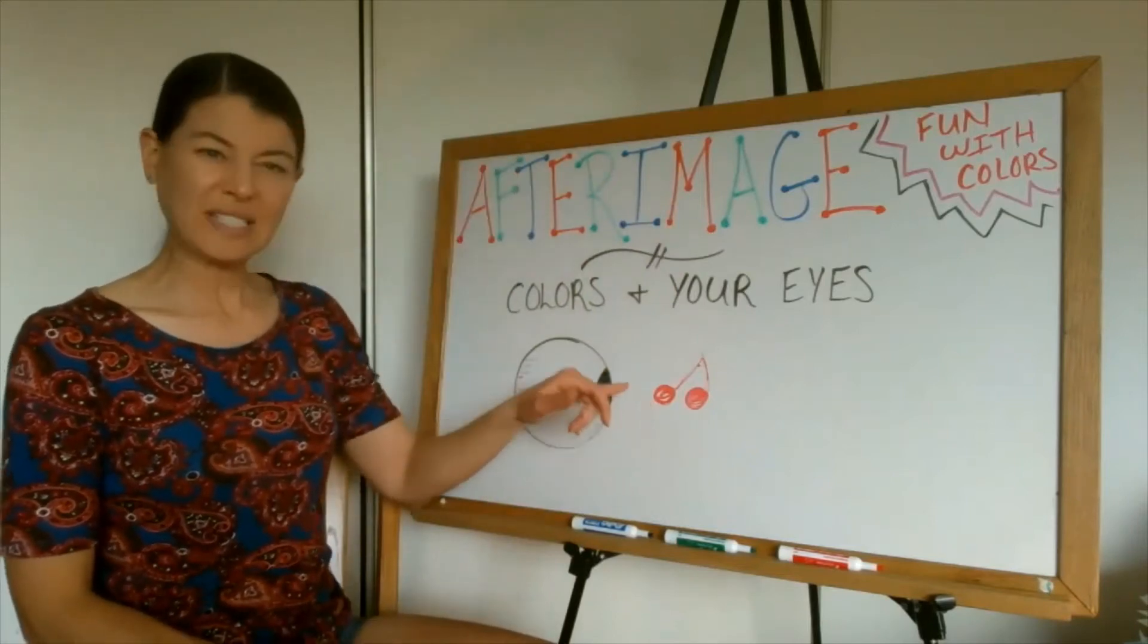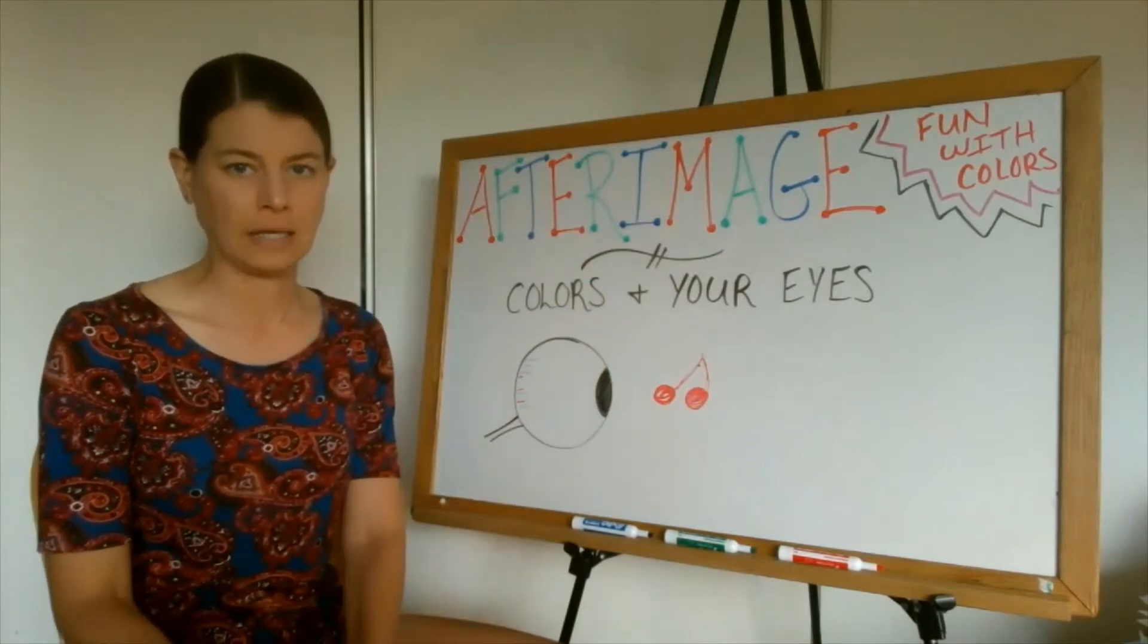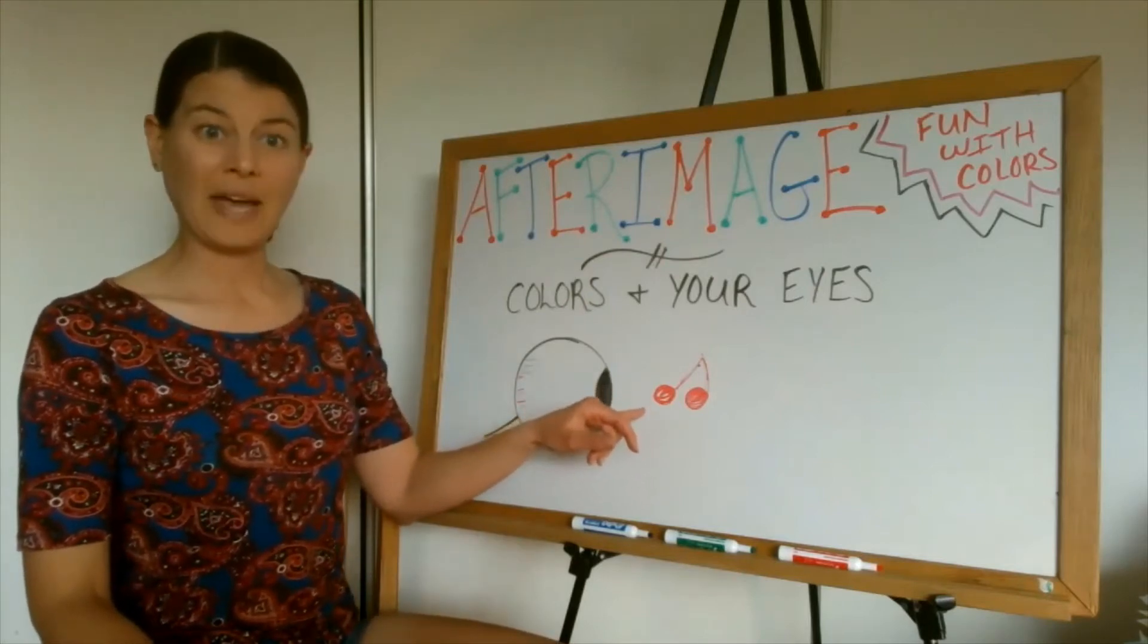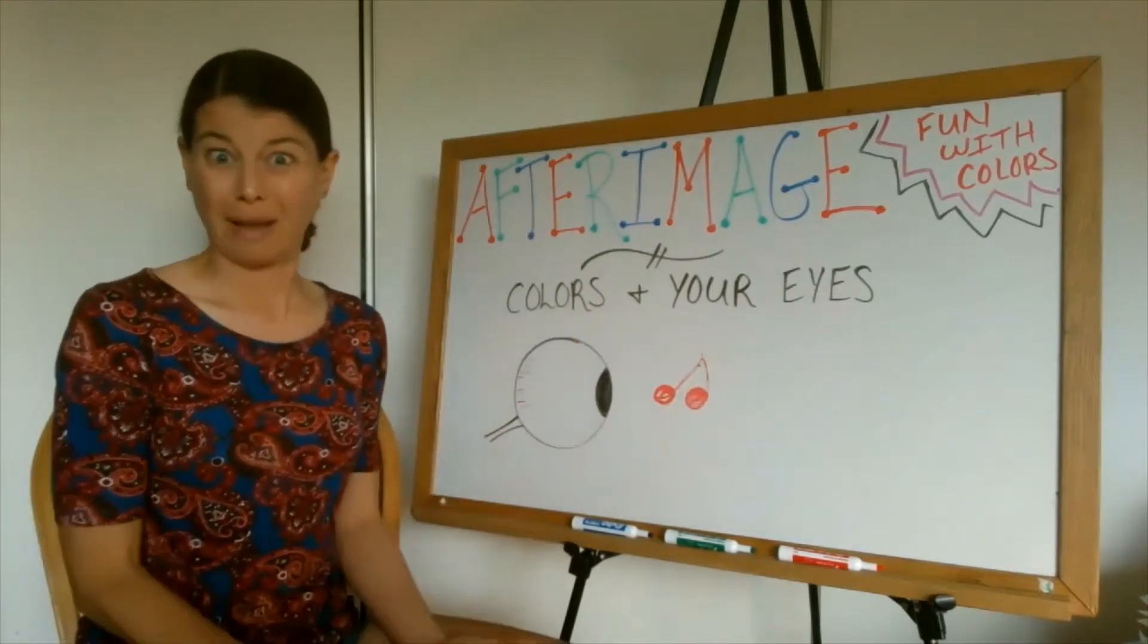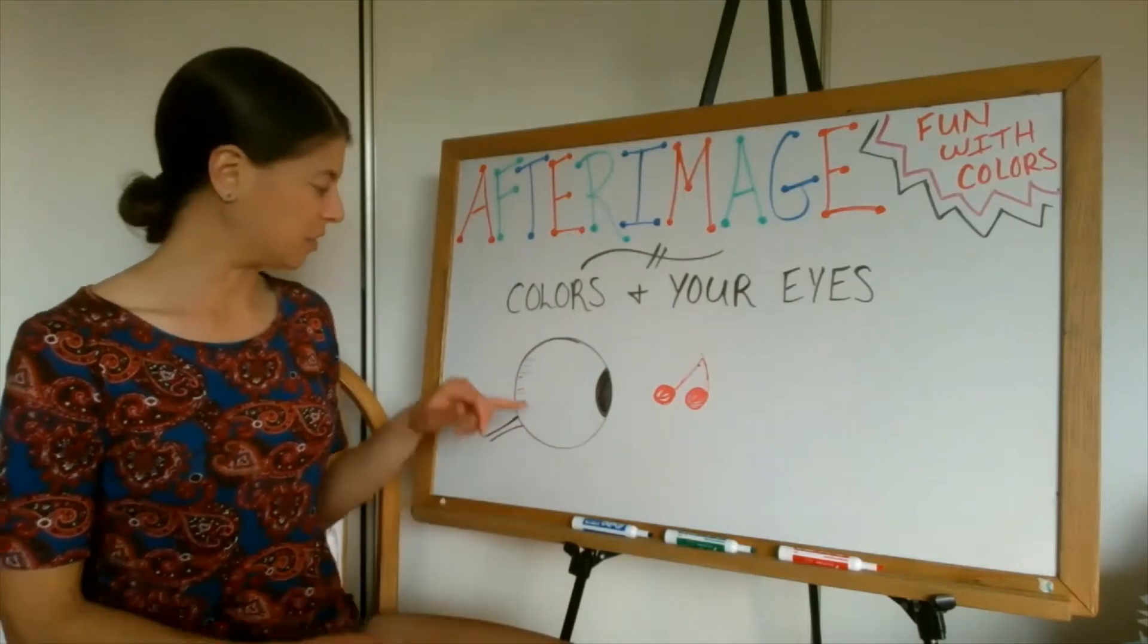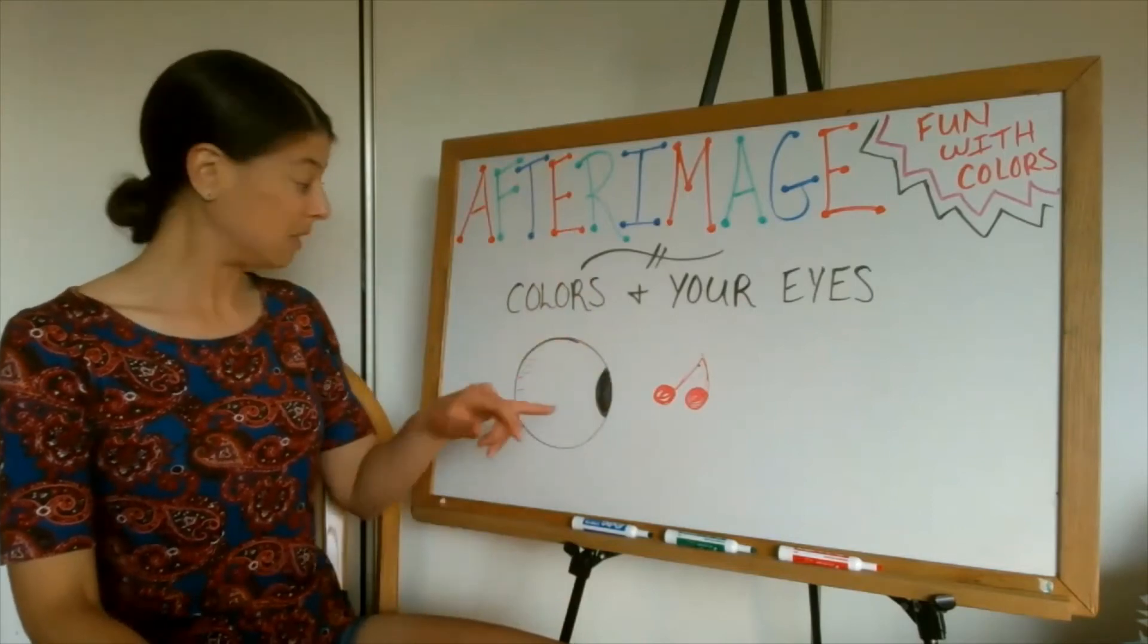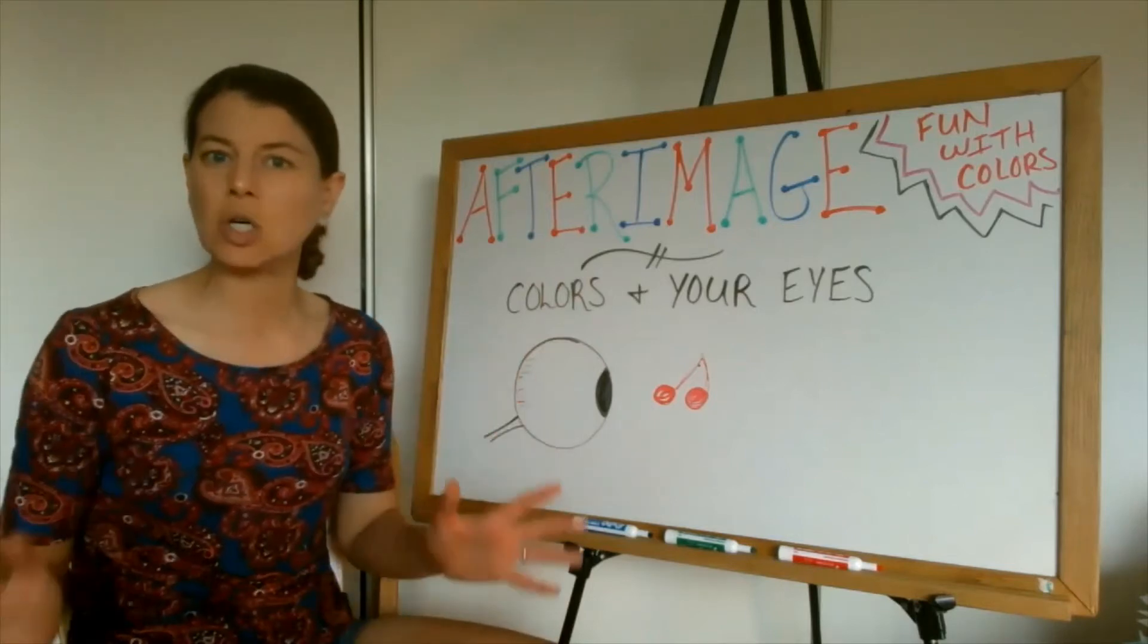If we stare at something red for a long time, just like any other part of your body, those cones start to get tired. We call that fatigue. I'm tired, I've been working a long time. So then if we were to take our eye from that red thing and then all of a sudden look at something white, well those red cells are tuckered out. They're not going to be working or not working as well. So that's when we start to see or think we start to see other colors because the green and the blues are still working. They're fine.